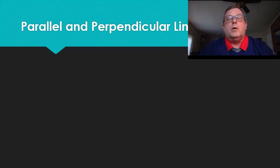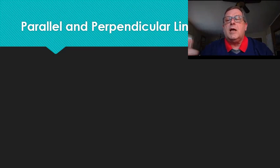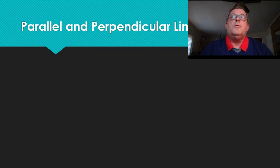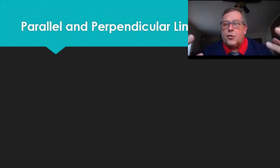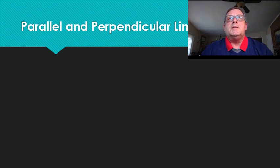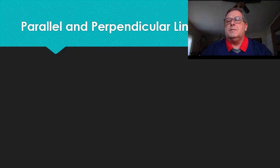In just a moment, we're going to write an equation in slope-intercept form for a line that's perpendicular to another line. But first, I want to go over this idea: if a line is perpendicular to another line, the slope of the perpendicular line is the negative reciprocal of the original line's slope.